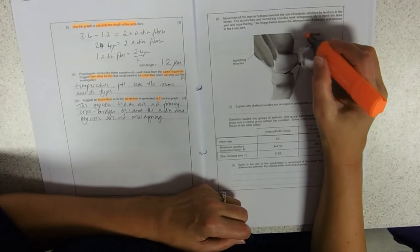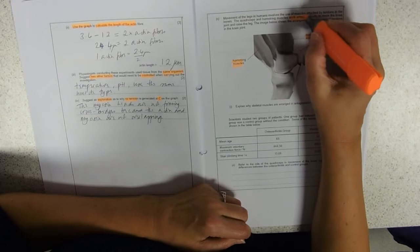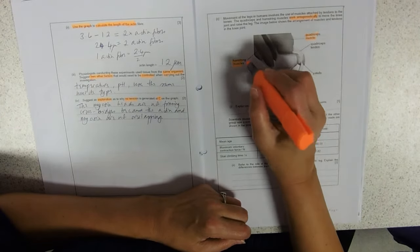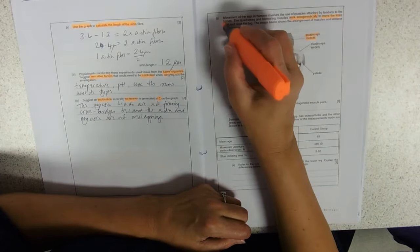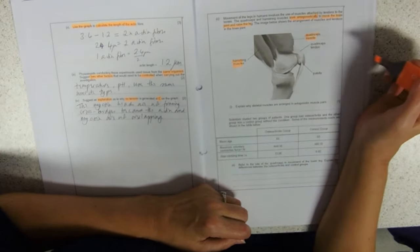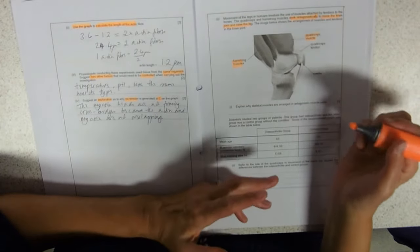They've labelled the quadriceps and the hamstring and they work antagonistically. That means that if this one contracts, this one's relaxed and vice versa to move the knee joint and raise the leg. Luckily, you take your joints into the exam with you. So that's really good.